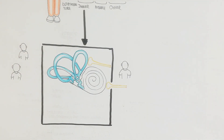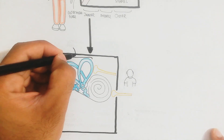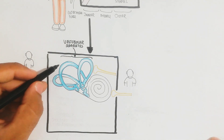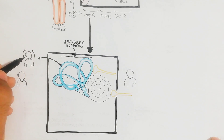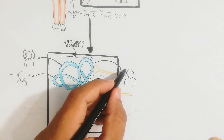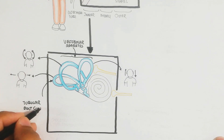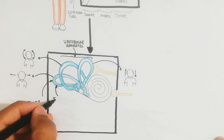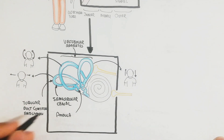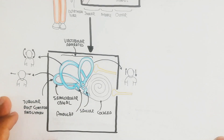The inner ear contains a vestibular apparatus known as the semicircular canal. There are three semicircular canals which control head movement — right and left movement, up and down movement, and tilt movement of the head — as shown in the diagram with a specific semicircular canal. This also shows the saccule and the ampulla.